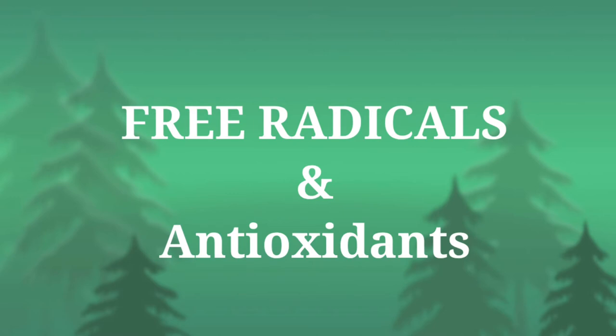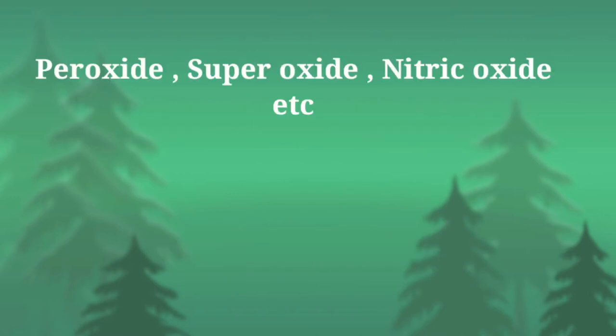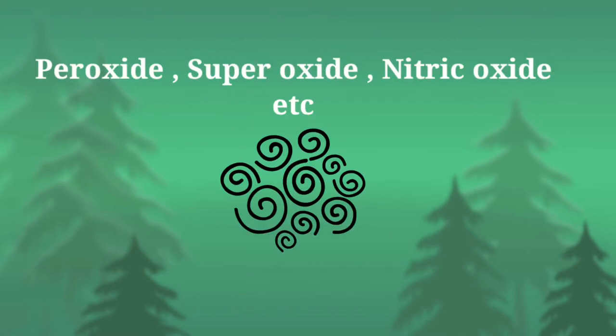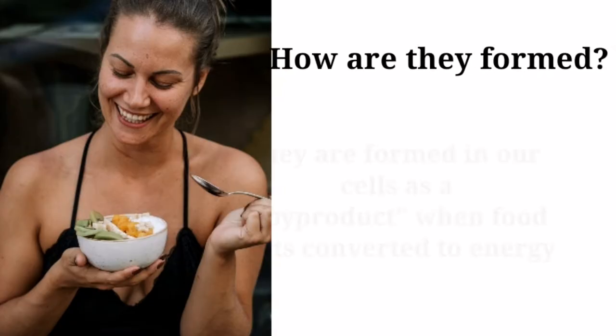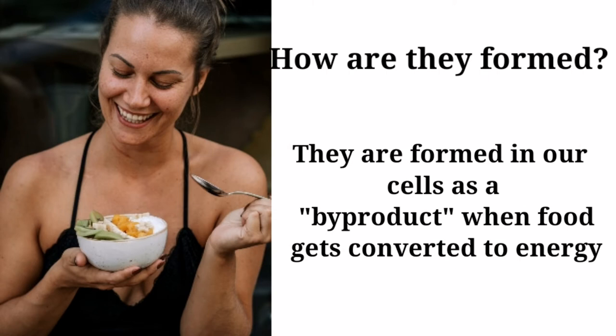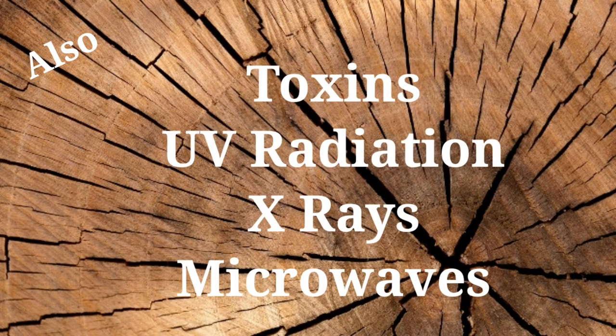In this video, let's see what are free radicals and antioxidants. In a body, certain molecules like peroxide, superoxide, and nitric oxide are produced by our cells — they are called free radicals. Free radicals are formed naturally and continuously in a body as a byproduct when the food we eat is converted into energy, and also due to toxins, ultraviolet radiation, X-rays, and microwaves.